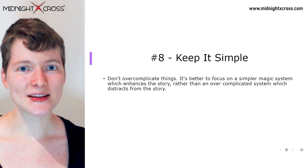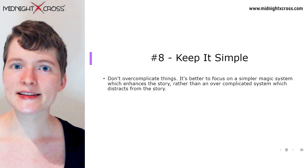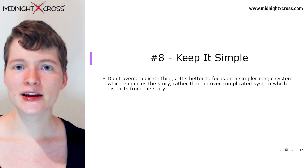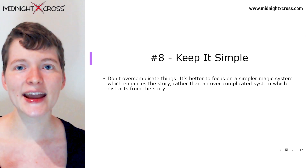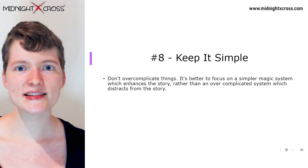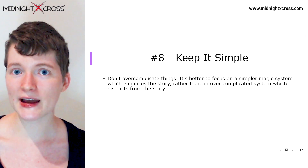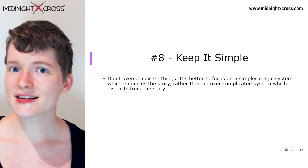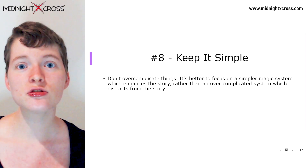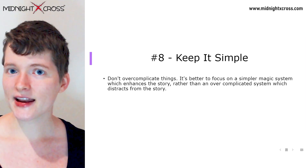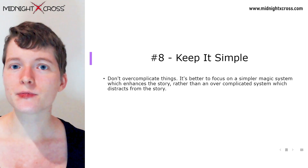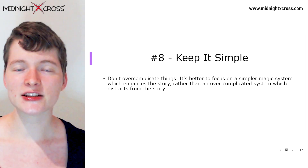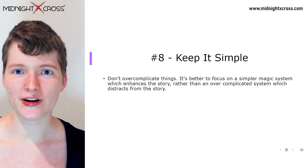Number eight: keep it simple. Try not to overcomplicate things. It's better to focus on a more simplified magic system that enhances the story you're telling rather than something overcomplicated that may distract from it. Always keep in mind that the magic system does not have to be overly detailed, but it can help you to better understand how to present that magic and use that power system to show how your character uses those abilities within your story.